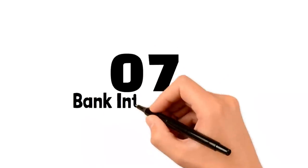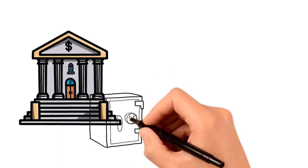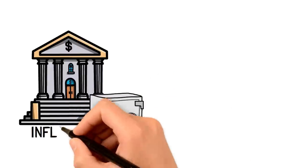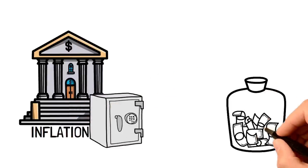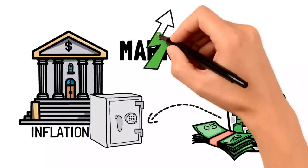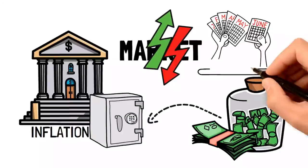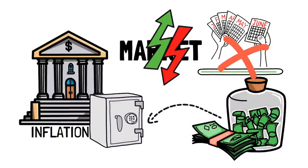Number seven, bank interest rates. They can be downright laughable, right? Sometimes they don't even keep up with inflation. So essentially, by putting your money in the bank, especially in a volatile economy, you're losing out on both the short-term and long-term gains. It's time to adapt and make your money work smarter, not harder.